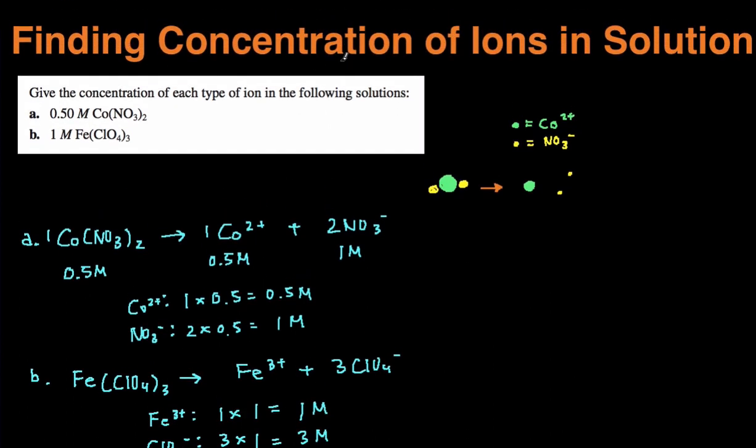That's how you would find the concentration of ions in solution. You can either do it the stoichiometric way, or you can just do the shortcut where you take the subscript of the ion and then multiply it by the concentration of the solution.